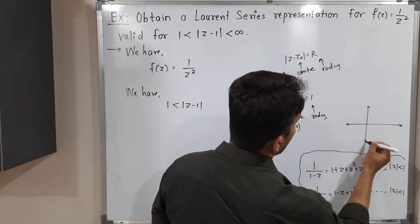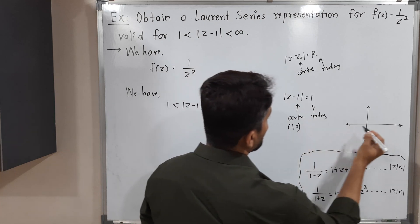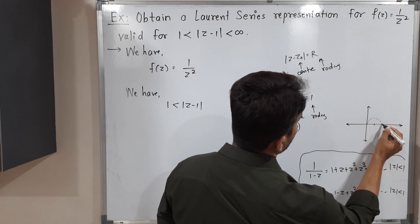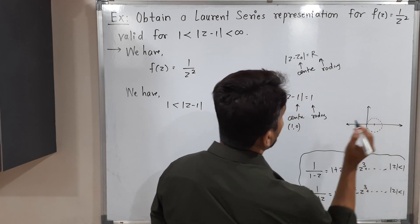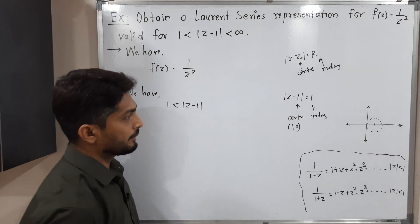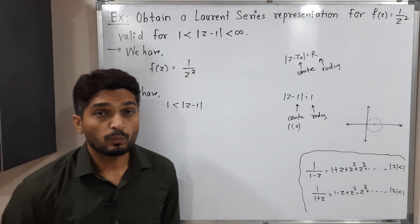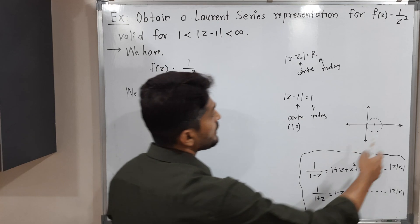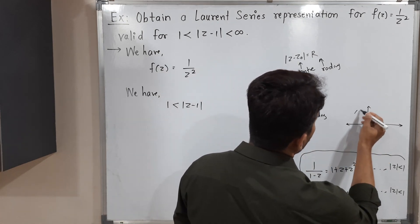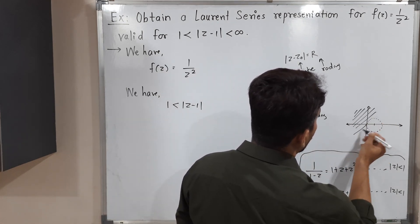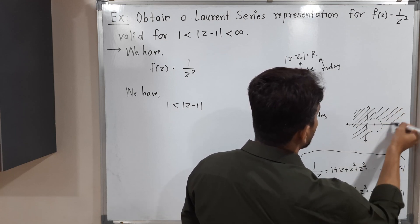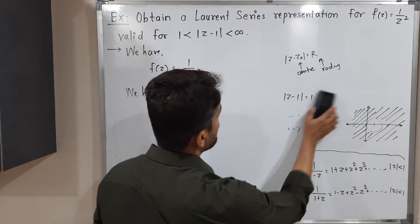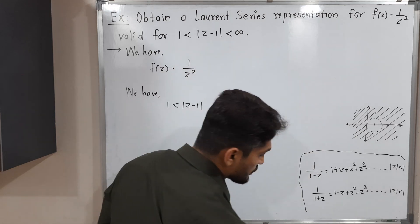Let us draw a rough sketch: this is the real axis and this is the imaginary axis. The point (1, 0) is here, and with radius 1 the circle is drawn with dotted lines because we have strict inequalities. The condition 1 < |z - 1| means the region is the exterior part of this circle. So our region of interest is the exterior of the circle centered at (1, 0) with radius 1.